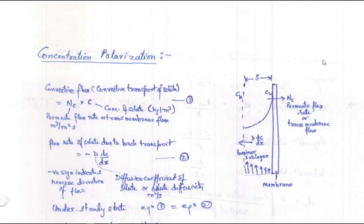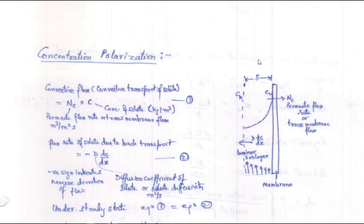In concentration polarization, what happens when we have a membrane? The membrane is shown in this diagram. On the left-hand side we have the feed channel, and from the downward end towards the upward end, this is the direction of flow of feed. Feed material is flowing in the feed channel, and as we go nearer to the membrane surface, the flow velocity with respect to the membrane reduces.